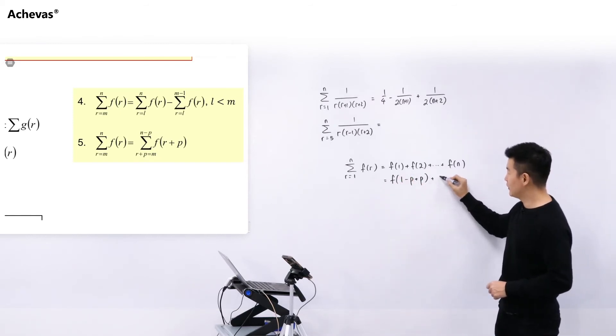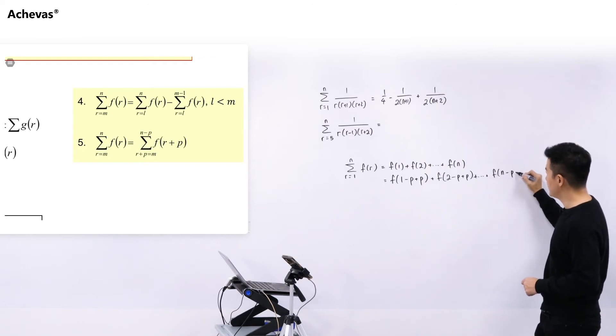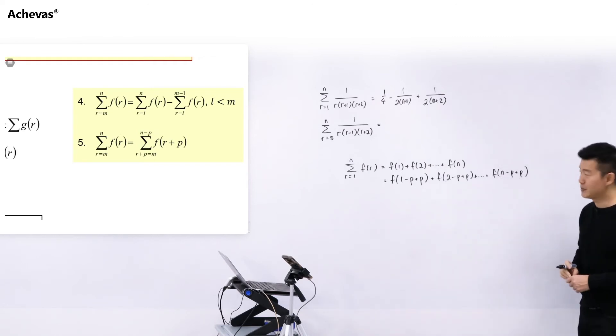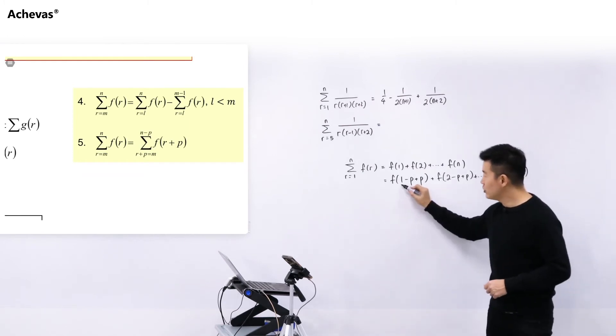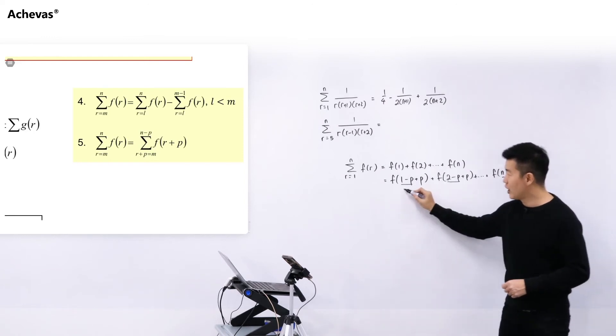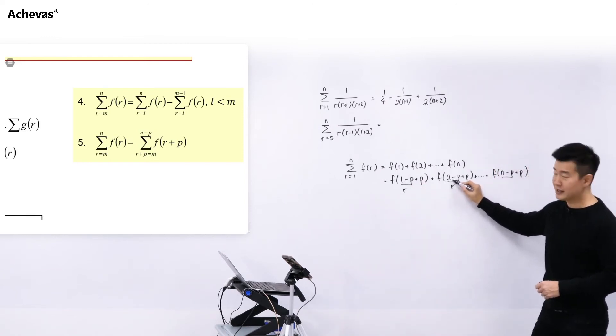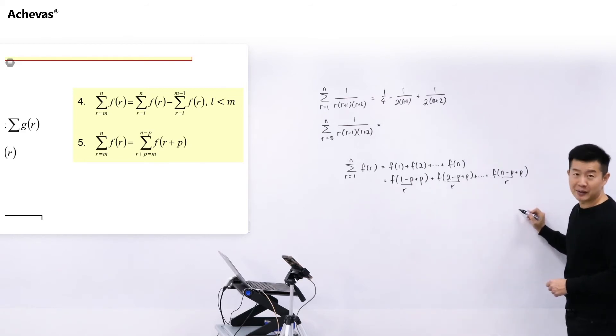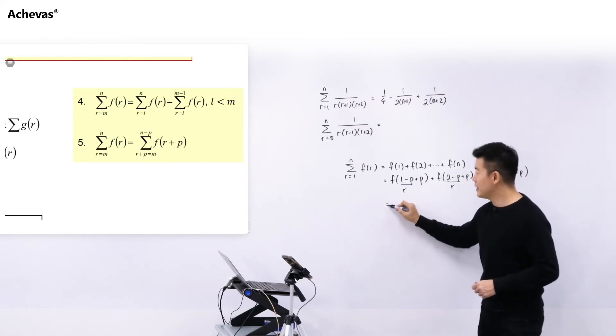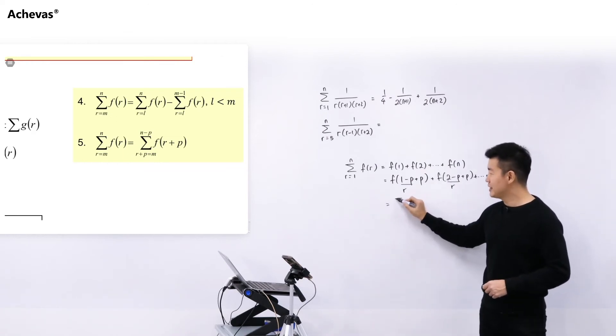So I will do that for here which is 2 minus P plus P, and all the way until the very last one is N minus P plus P. And if you now treat this as a new R, so R starts from 1 minus P, then it goes to 2 minus P, and you'll go all the way until N minus P, then we can re-express this summation.